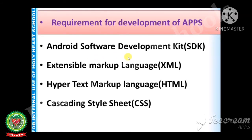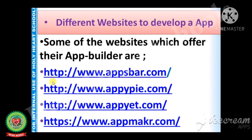To make an Android app, software such as the Android Software Development Kit is required. Knowledge of Extensible Markup Language (XML) and HyperText Markup Language (HTML) is required. Cascading Style Sheets (CSS) are also desirable. There are two ways to develop an app: an Android app can be developed using web-based app development software. Some websites used to create an app include www.appsbar.com, appypie.com, appyet.com, and appmaker.com.